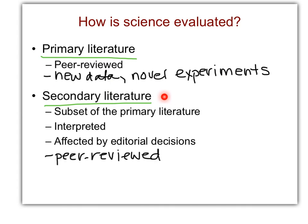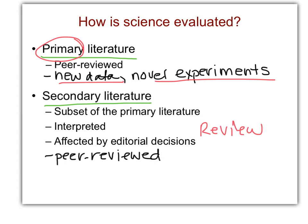Secondary literature, on the other hand, is a subset of the primary literature. An individual or a group of scientists reads all the primary literature on a specific subject — like a specific protein, for example — and interprets it, putting it all together into one publication that is also peer-reviewed to make sure it's not biased by that one person or group's opinions. That publishes what we would call a review paper. So that's much different than something that's primary. Primary has new experiments, new data. Secondary is a review — it puts all that new data together.